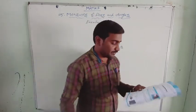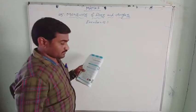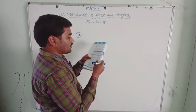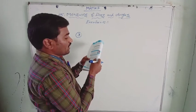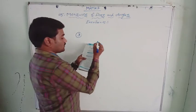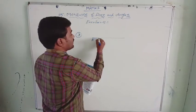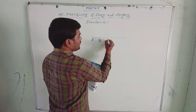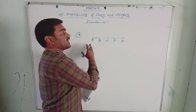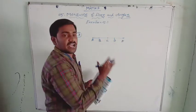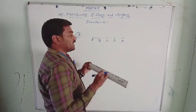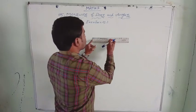The third question is that, measure the line segments in the figure given below and arrange them in ascending order of their lengths. Suppose, here they have given a line segment A, B, C, D and E. These are the line segments. They have given some points A, B, C, D, E on these line segments. What we need to do is, take a ruler and measure the length of line segments.